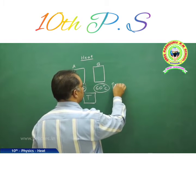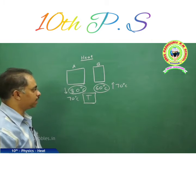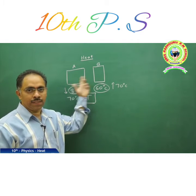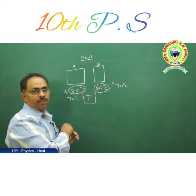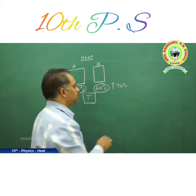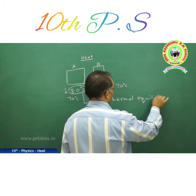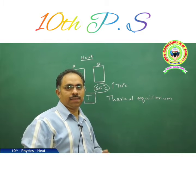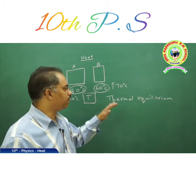And from 60 degrees, it will rise up to 70. So the temperature of body A is 70 degrees Celsius and temperature of body B is also 70 degrees Celsius. We can verify this by keeping the thermometer in contact with each body separately. When both bodies have equal temperature — equal degree of hotness or coldness — we say both bodies are in thermal equilibrium. Thermal equilibrium means equal status with respect to heat.